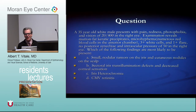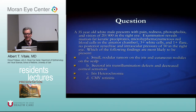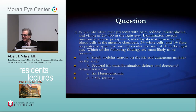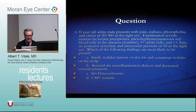With herpes, you can have either granulomatous or non-granulomatous KP — it can do anything. The answer on this board question would be sectoral transillumination defects and decreased corneal sensation, which points to herpes, specifically varicella zoster.